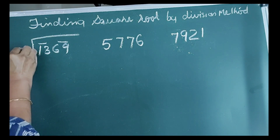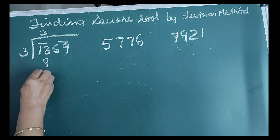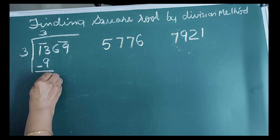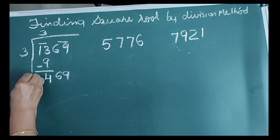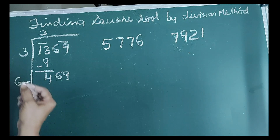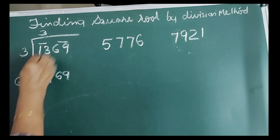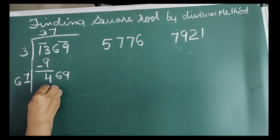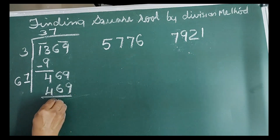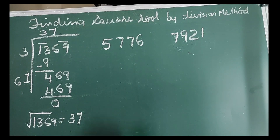Next number is 1,369. Take 3 as the divisor and quotient. 3 times 3 is 9, remainder 4. Bring down next bar 69, new dividend is 469. Double the quotient: 3 times 2 is 6, with a blank. Guess digit 7, quotient also 7. 7 multiplied by 67 gives 469, remainder is 0. Therefore, square root of 1,369 is equal to 37.